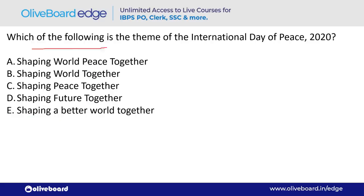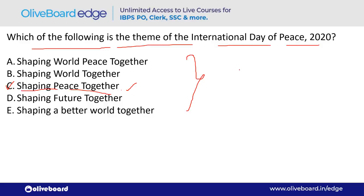What is the theme of the International Day of Peace 2020? The answer is 'Shaping Peace Together' — option C. This day is celebrated on 21st September every year.